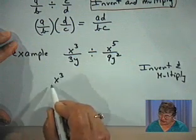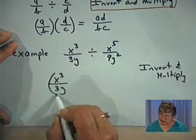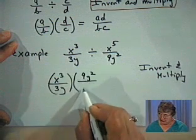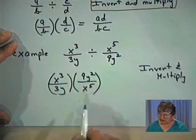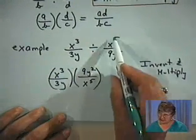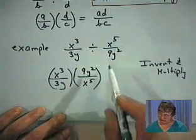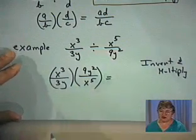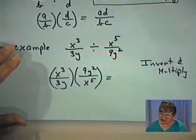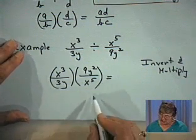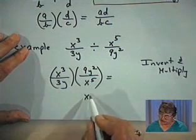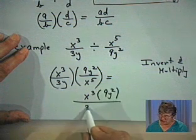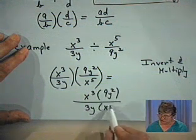We're going to use X cubed over 3Y and multiply it by the inverted divisor — invert the divisor and multiply. This is called a divisor, the number we're dividing by. Because it's now a multiplication problem, we can go ahead and cancel common factors. We'll do the multiplication: this is X cubed times 9Y squared, divided by 3Y times X to the fifth.